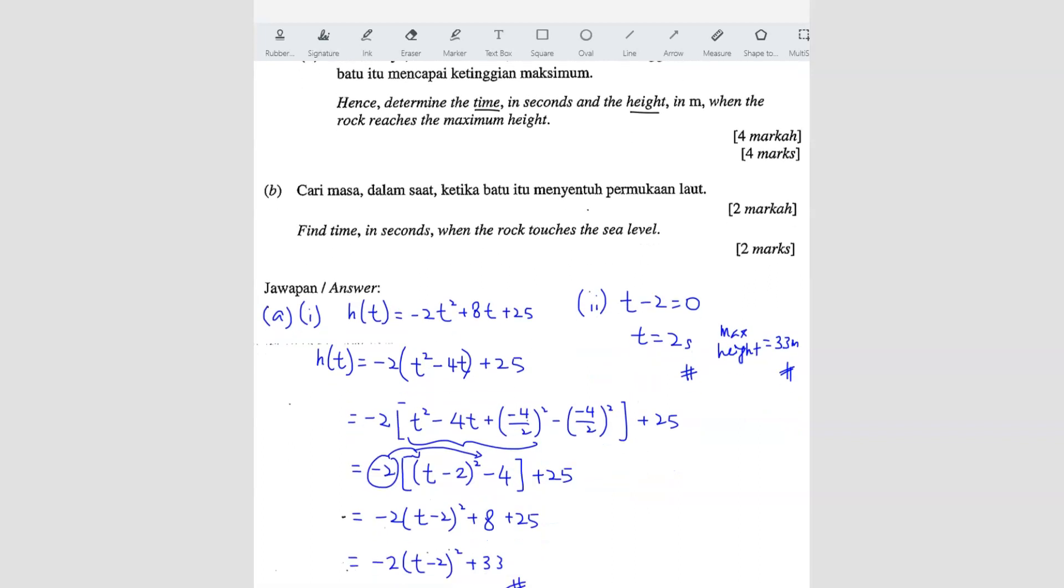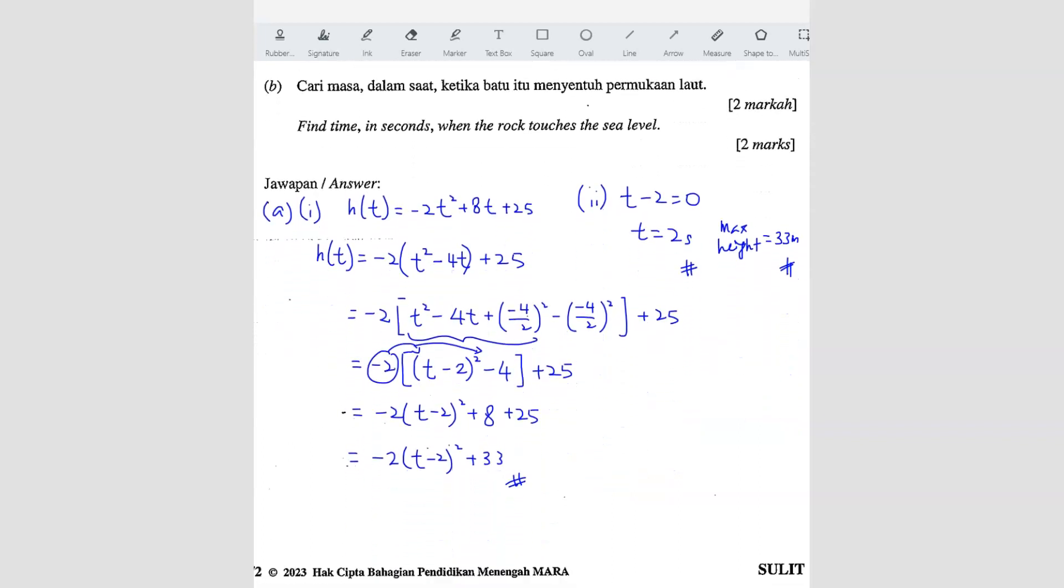Part B. Find the time when the rock touches the sea level. What does that mean? We know that the function H(t) represents the function of the height relative to the sea level. That means you're starting from the sea level. So if the rock touches the sea level, that means the height, the H(t) is equals to zero. Because the function represents the height of the rock starting from the sea level. So if it's at the sea level, that means the height is zero.